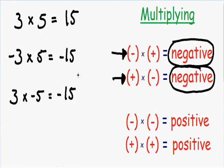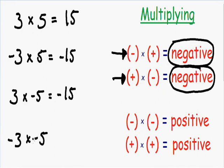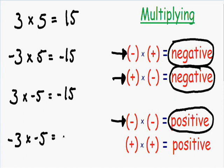Let's go over one more example: negative 3 times negative 5. Notice how we have a negative number being multiplied by another negative number — a negative times a negative. So we know our answer is going to be positive, giving us positive 15.